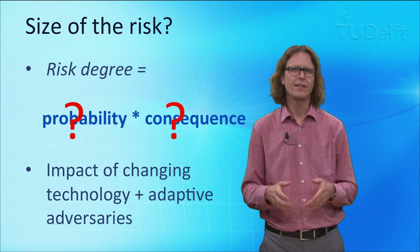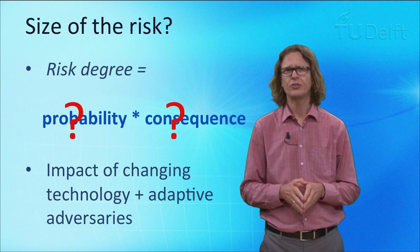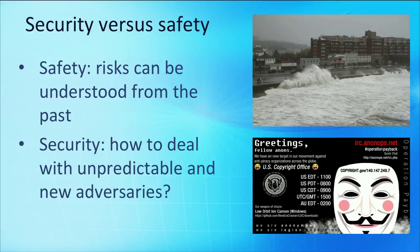Not only is the technology itself changing, but we are also often dealing with adversaries — not forces of nature. In this sense, security is very different from safety. A safety risk, say a hurricane of a certain magnitude or a metal valve breaking under pressure, can be understood from studying past incidents. Metal valves do not suddenly change their behavior. But human opponents do. Adversaries adapt to new security measures. Sometimes wholly new adversaries suddenly enter the playing field.